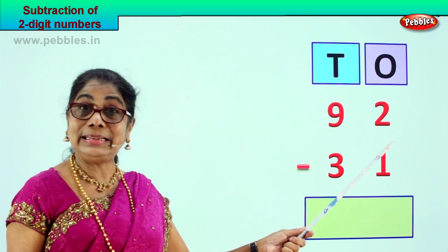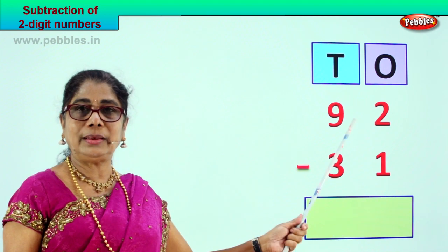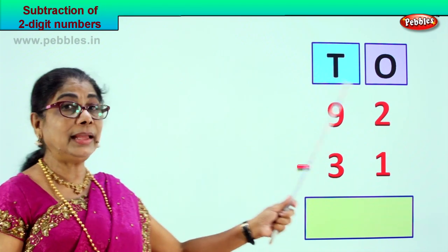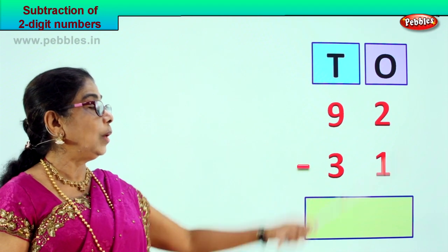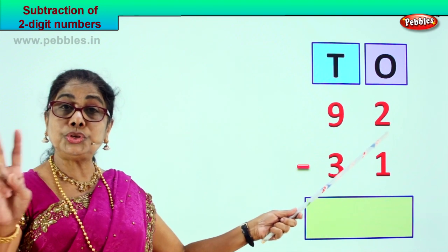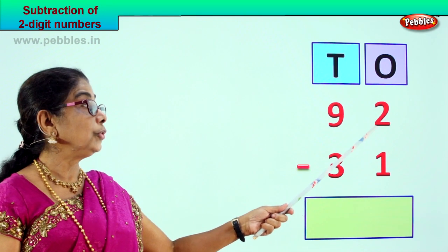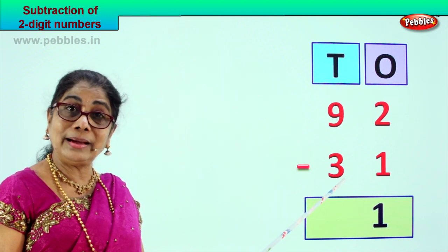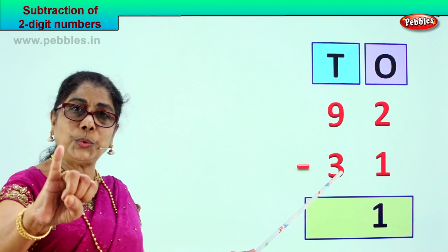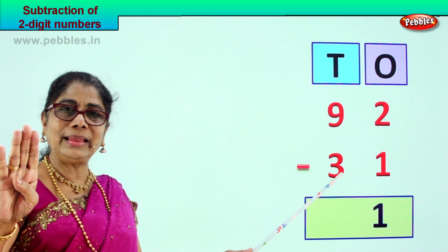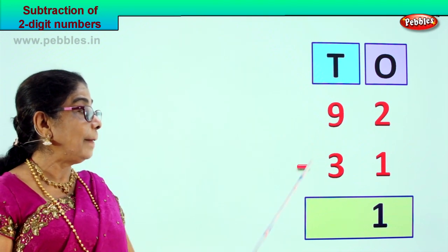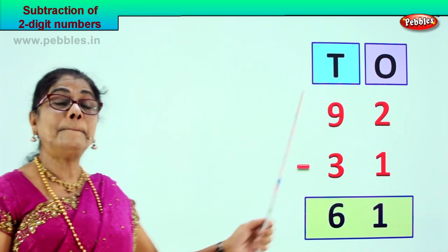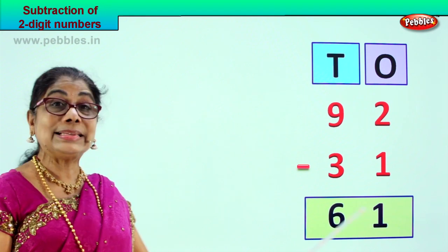Shall we go to another sum? Look — 92 minus 31. We have put them in ones and tens order: nine tens, two ones, three tens, one one. In the ones place: two minus one, two take away one is one. Now the tens: nine take away three — three, four, five, six, seven, eight, nine — nine minus three is six. Your answer is 61. 92 minus 31, your answer is 61.